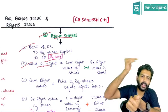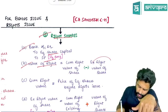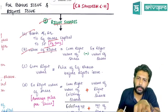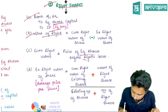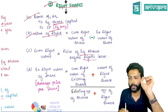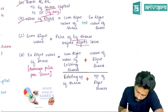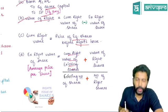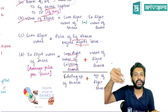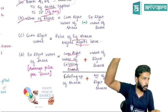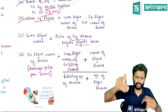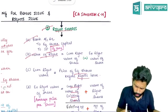The value of the right is given by the formula: cum-right price of the share minus ex-right price of the share. Cum-right price means the value of the share before the rights issue. Ex-right price is calculated as: (value of existing shares + value of right shares) divided by (number of original shares + number of right shares). So the value of the right is simply cum-right minus ex-right. That's all with respect to the first chapter: accounting for bonus shares and right shares.